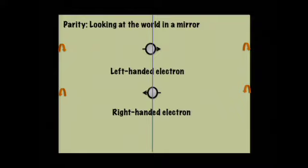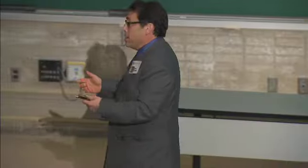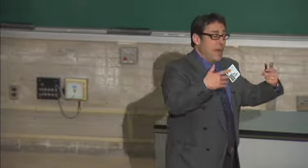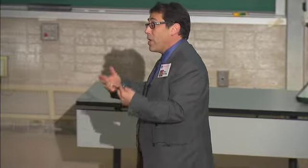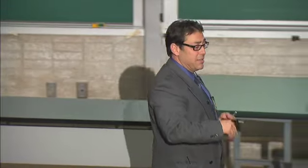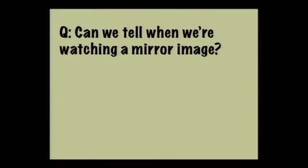What does that mean? It means that if it's true that we can't tell the difference when looking in a mirror, then right-handed and left-handed electrons should behave exactly the same. We shouldn't be able to tell the difference in how they behave. So the question is: can we tell when we're watching a mirror image by watching how electrons behave?